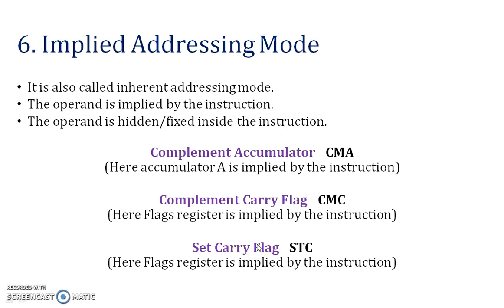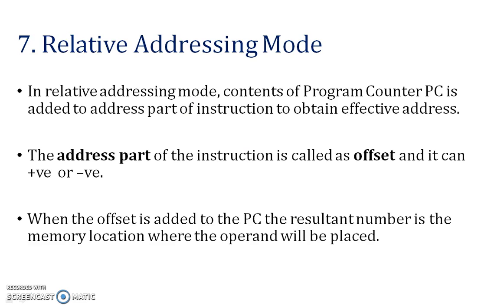Next — implied addressing mode, also called inherent addressing mode. For example, the complement accumulator instruction: whenever you store data in the accumulator, you complement that data, and at that time a flag is generated. This is called implied addressing mode. Other examples include complement carry flag and set carry flag — these are all implied addressing mode examples.